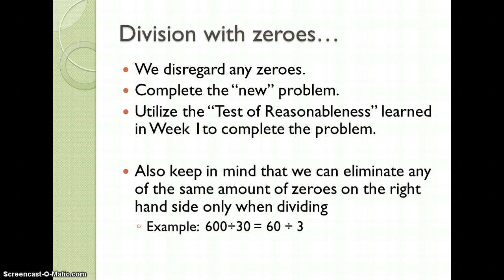For example, if we have 600 divided by 30, we can eliminate a zero from the 600 and a zero from the 30, and the same problem will be 60 divided by 3, regardless if those zeros are there or not. If we have 8,000 divided by 200, we can eliminate two zeros from the left-hand side and two zeros from the right-hand side, giving us 80 divided by 2, which will give us the exact same answer as 8,000 divided by 200.